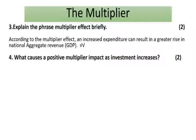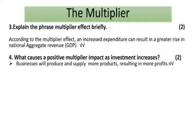The last question: what causes a positive multiplier impact as investment increases? Note it is just two marks, but here are as many points as possible. Businesses will produce and supply more products, resulting in more profits. When there is an increase in investment, businesses are producing more, supply also increases, and businesses are going to earn higher profits.